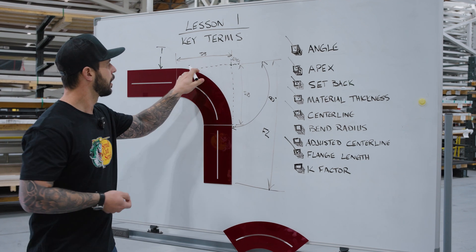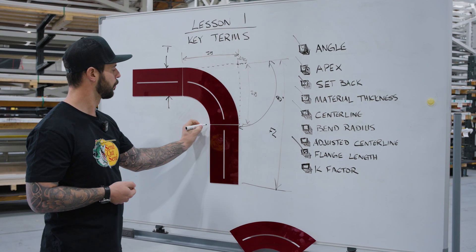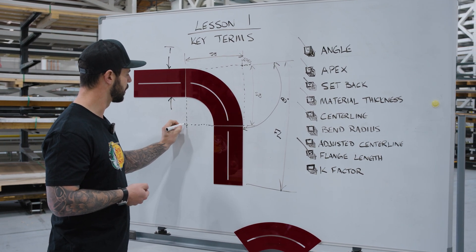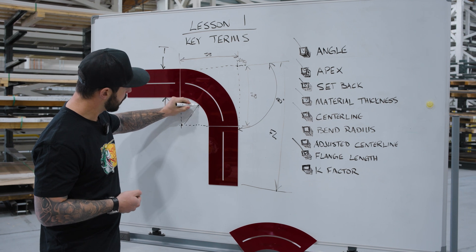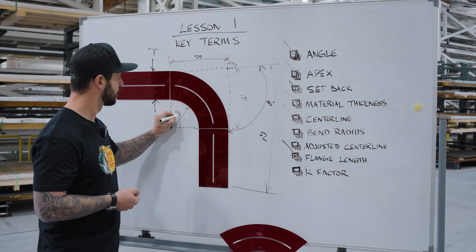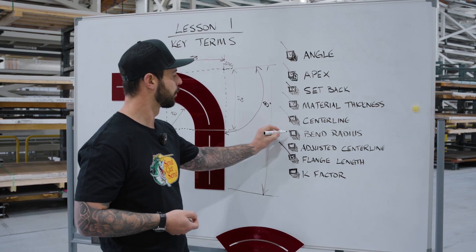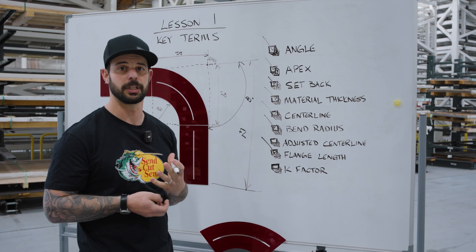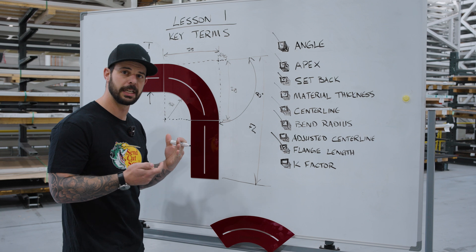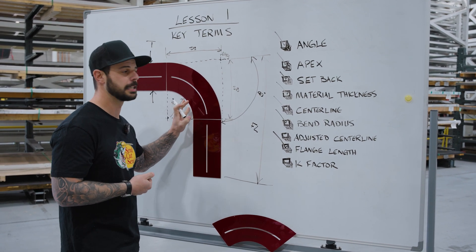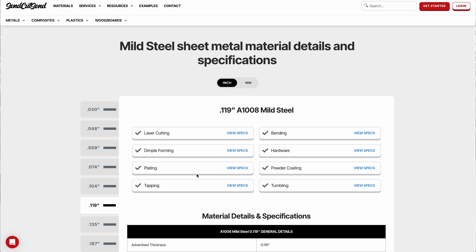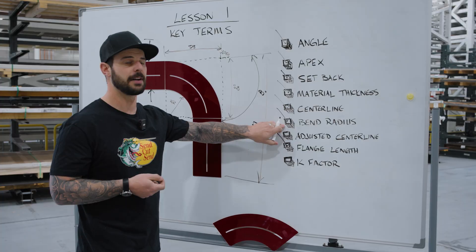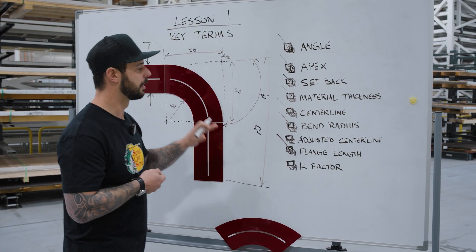Now for bend radius — we have the apex out here, and we're going to draw another dotted line that meets out here in space. This distance from the point of contact is our bend radius, and that's measured off the inside of the part. The die and punch combination — more specifically the punch — determines what that bend radius is. The tooling used during bending dictates this. On our website, when you select your material, you'll see which punch we're using, and that tells you what bend radius you should have on your parts.